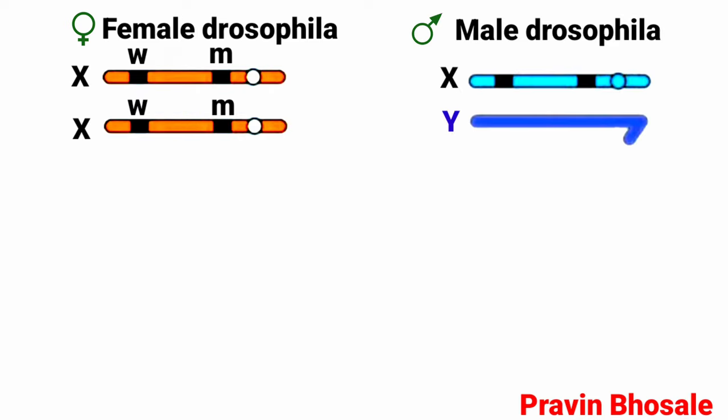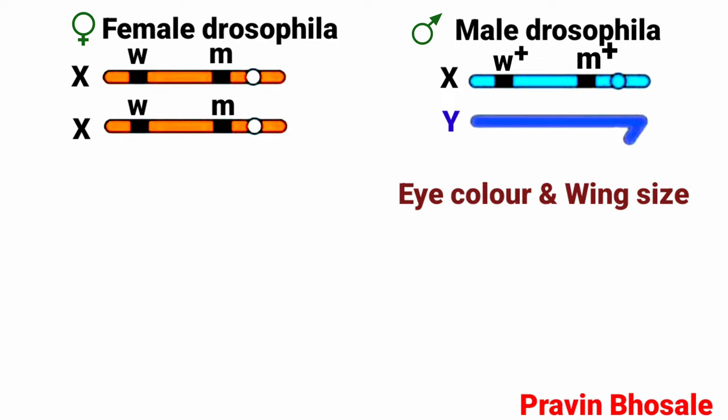The male has X and Y chromosomes. The X chromosome will have w plus and m plus. The Y chromosome doesn't have genes for eye color and wing size.